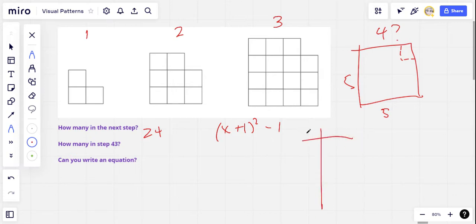So I'm going to make a chart here. We're going to have the step number and the number of squares. So the first one has three. So step number one has three. Step number two has eight. And step number three, so that's four by four, 16 minus one, that's 15. And then we're predicting, in step number four, we're predicting 24.